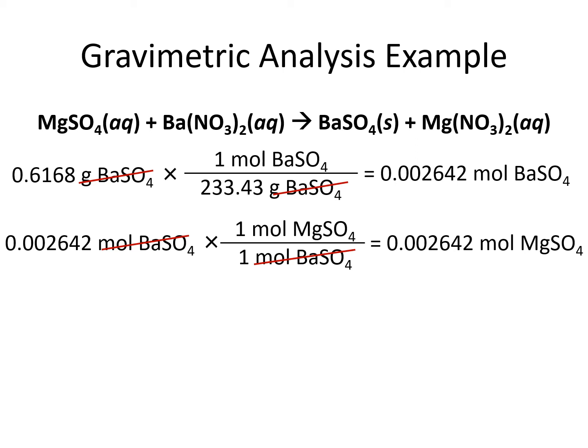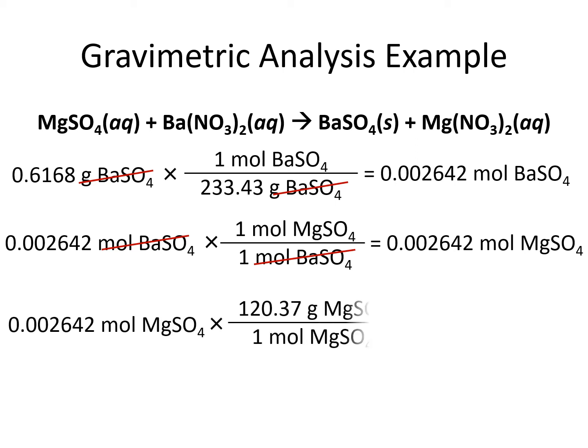We can take those moles of magnesium sulfate and change them into grams using the molar mass of magnesium sulfate. We're multiplying by that molar mass — remember, the molar mass always goes next to grams. We find out that 0.3181 grams of magnesium sulfate were in our original mixture.